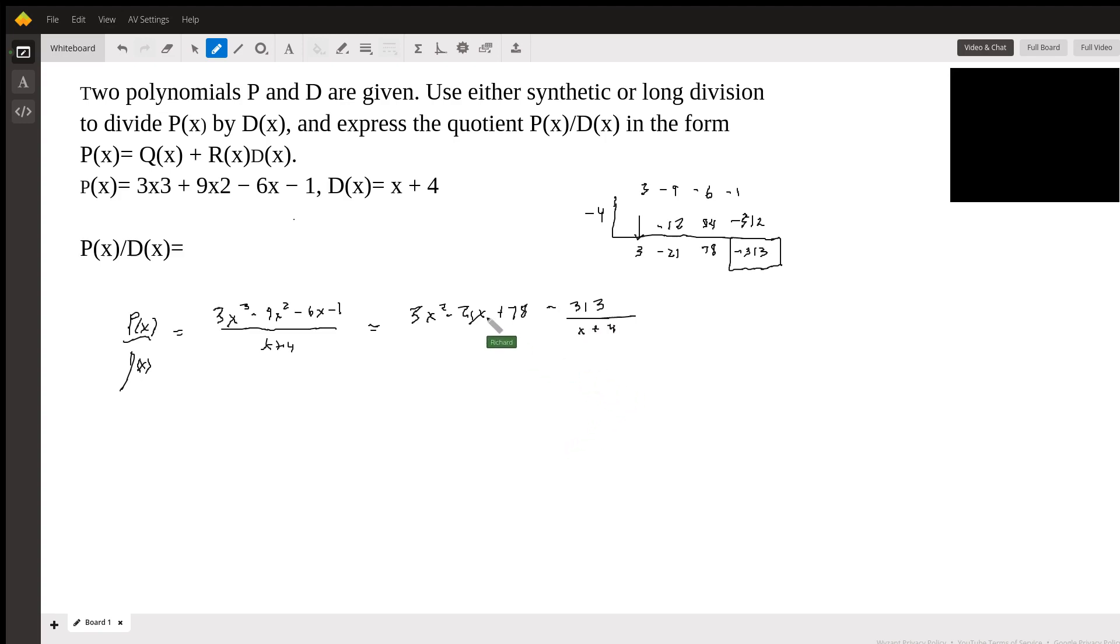Okay. So this is our quotient. And then the remainder over the divisor. So that's it. That's all you have to do.